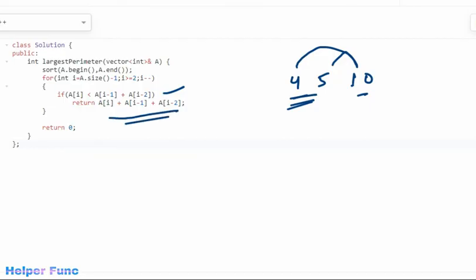Otherwise, we will come out of this loop. Let's say for example, this case. For this example, the if condition will not be satisfied and we will come out of this loop and we will return 0 as our answer.